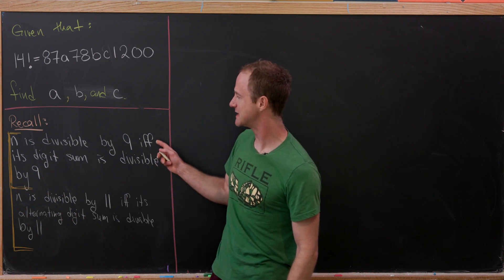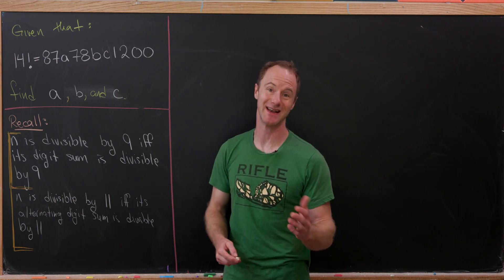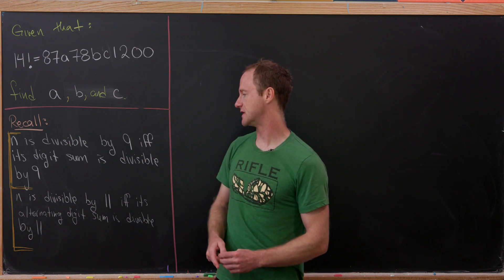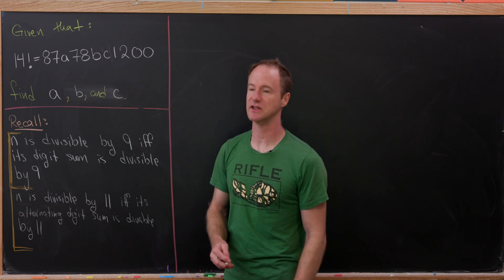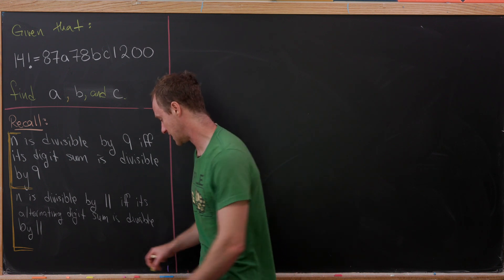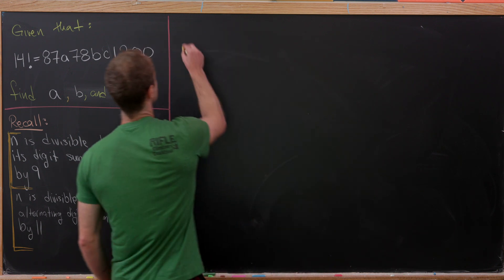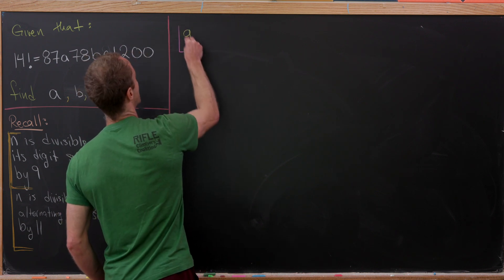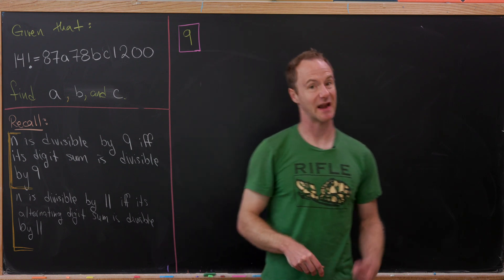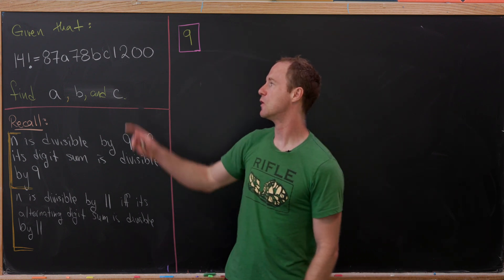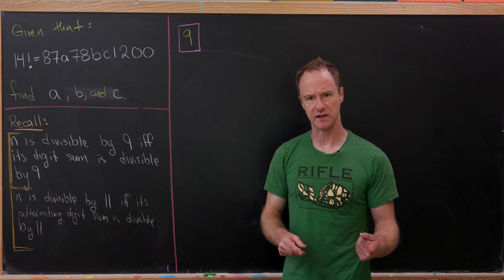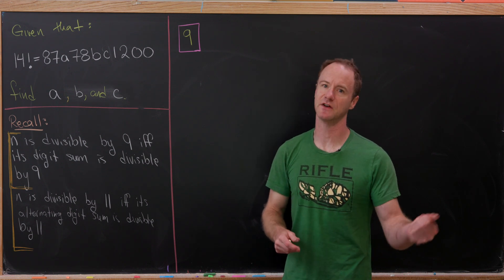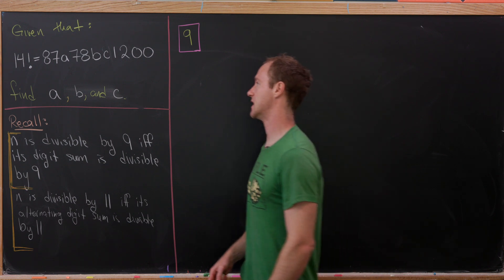Along the way, we're going to use the standard divisibility trick by 9, which says that you should look at the digit sum, and the divisibility trick by 11, which says you should look at the alternating digit sum. Let's look at the 9 rule first — we're going to impose that this number is divisible by 9. We know it's divisible by 9 because 14 factorial includes 14 × 13 × 12 × 11 × 10 × 9, and there's a 9 there.